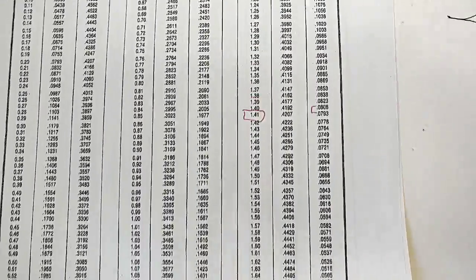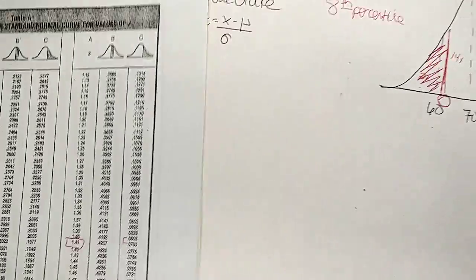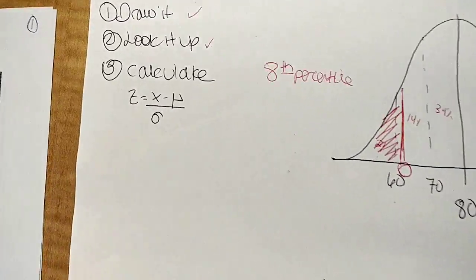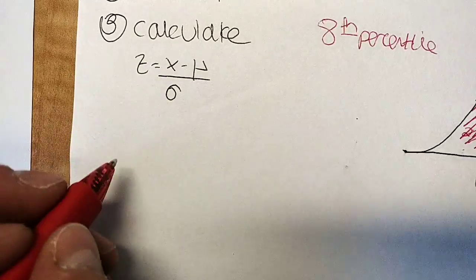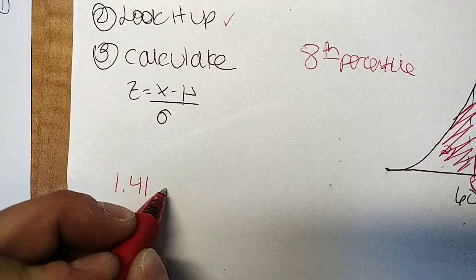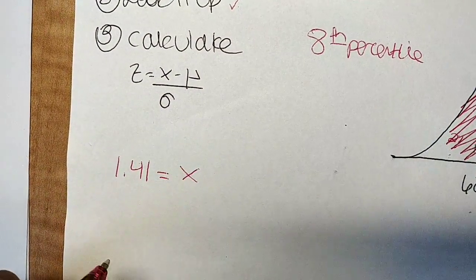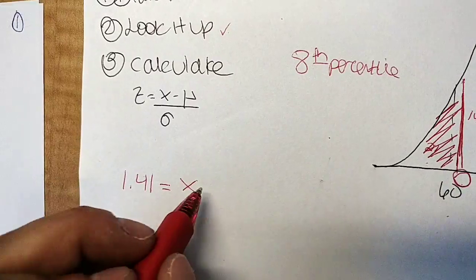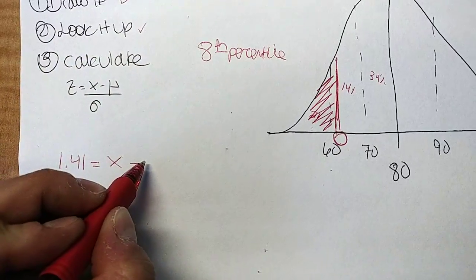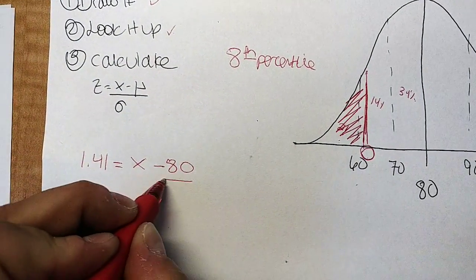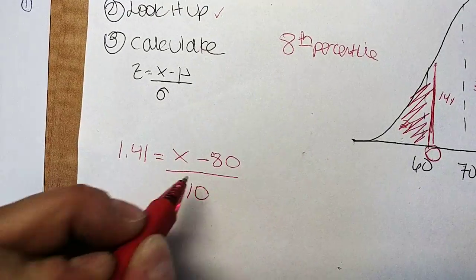So I now have a Z score of 1.41, so I'm going to plug that back into this formula. So I know that it's 1.41 equals, and X is the number that I'm looking for, minus, remember my mean was 80, divided by my standard deviation of 10.